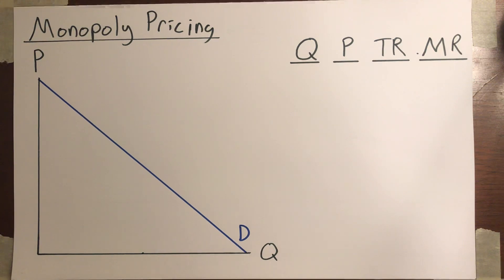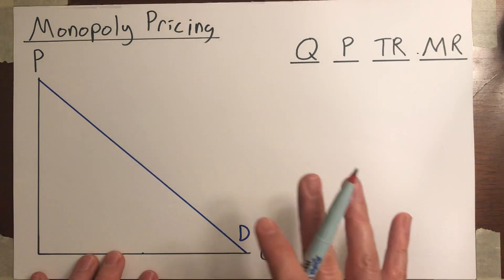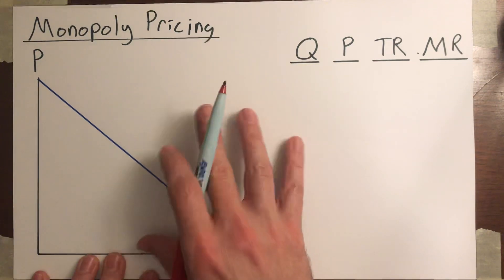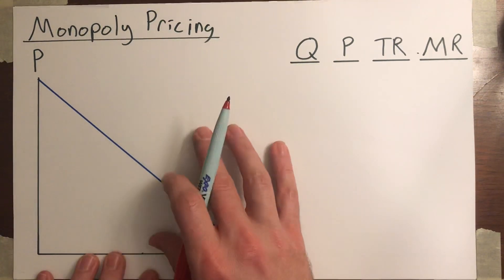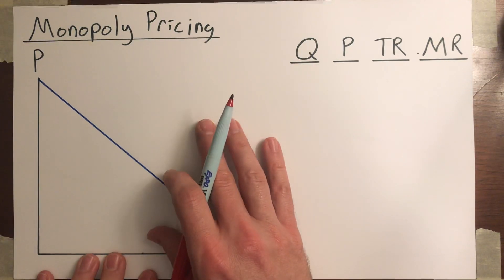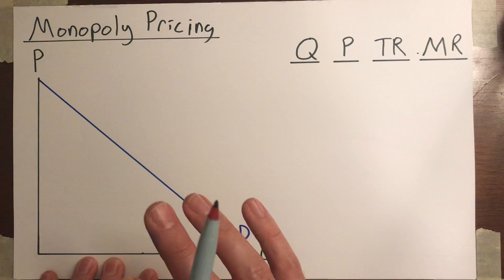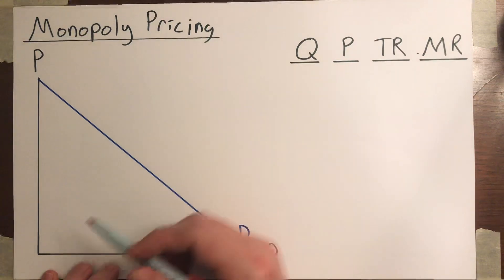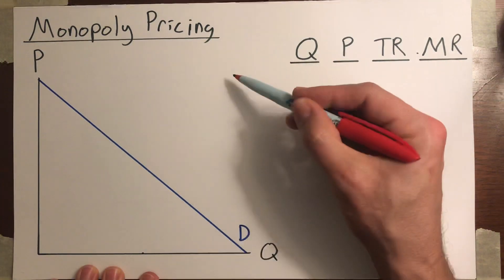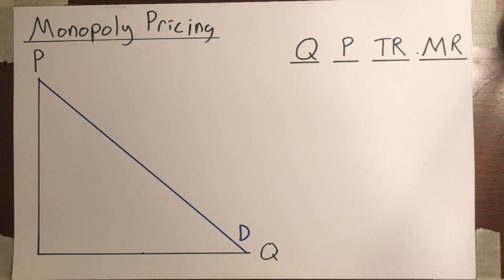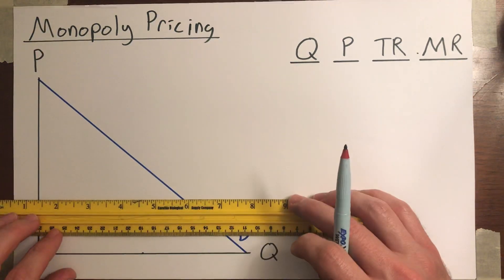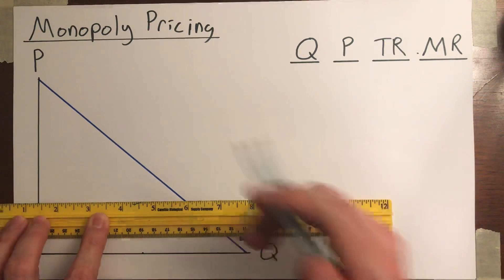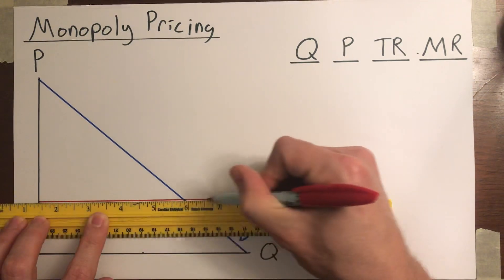Now, remember in the last lecture on perfectly competitive markets, we talked about marginal cost and marginal revenue. In order to make sense of the monopolist's choice, we need to add those to this graph. For marginal cost, we're going to make a simplifying assumption for the monopolist, and that is that he's got constant marginal cost. So it's not going to be a U-shaped curve. For simplicity, we're going to model the monopolist as having a marginal cost curve that's just a straight line.